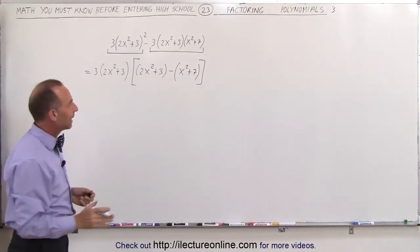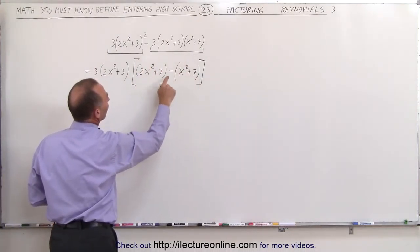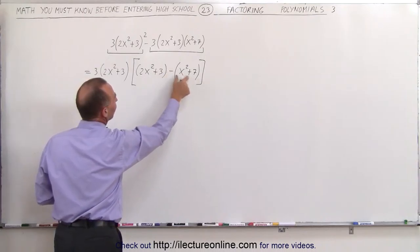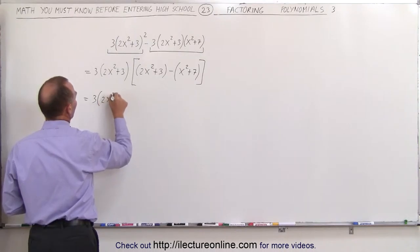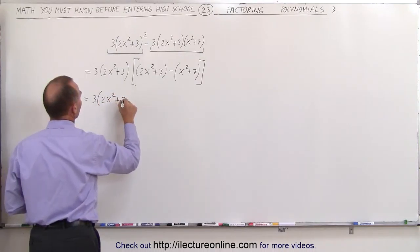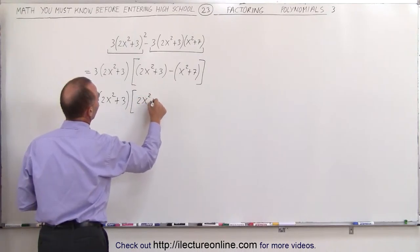Now we can go ahead and simplify what's inside by getting rid of the parentheses and applying the negative sign to everything that's inside here. So this can be written as 3 times 2x squared plus 3 times the quantity 2x squared plus 3,